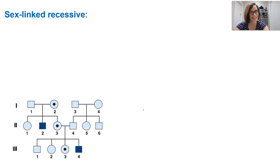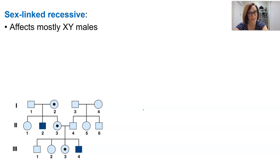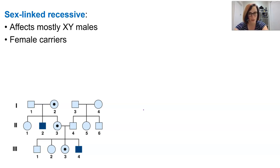When a disorder is inherited in an X-linked recessive mode — such as colour blindness or haemophilia — the trait is not dominant and will therefore more likely affect XY males in the family. Females can be carriers, but there are far fewer incidences of them being affected with that phenotype, because they have that second X to rely on. So we will see female carriers in these pedigrees.